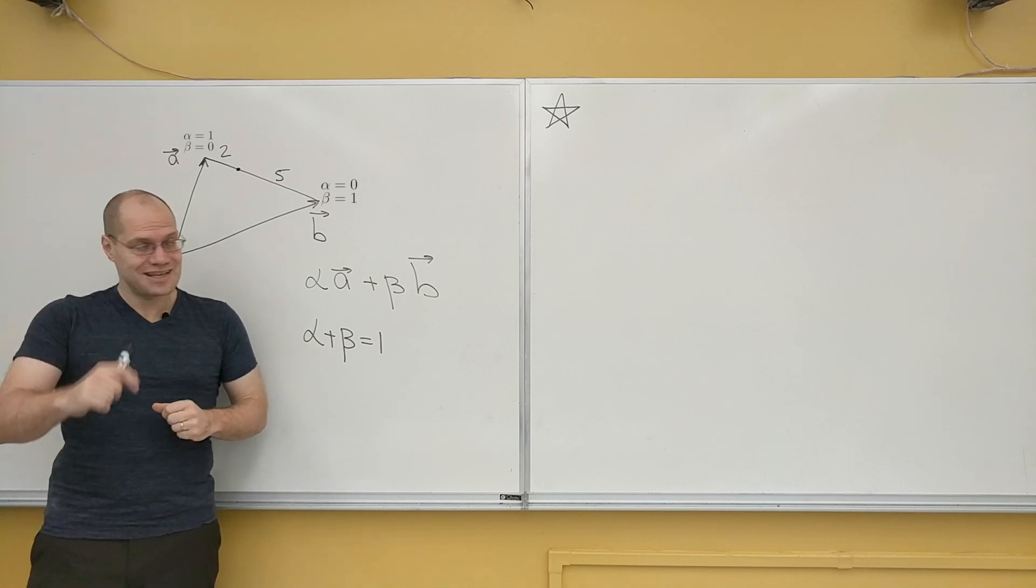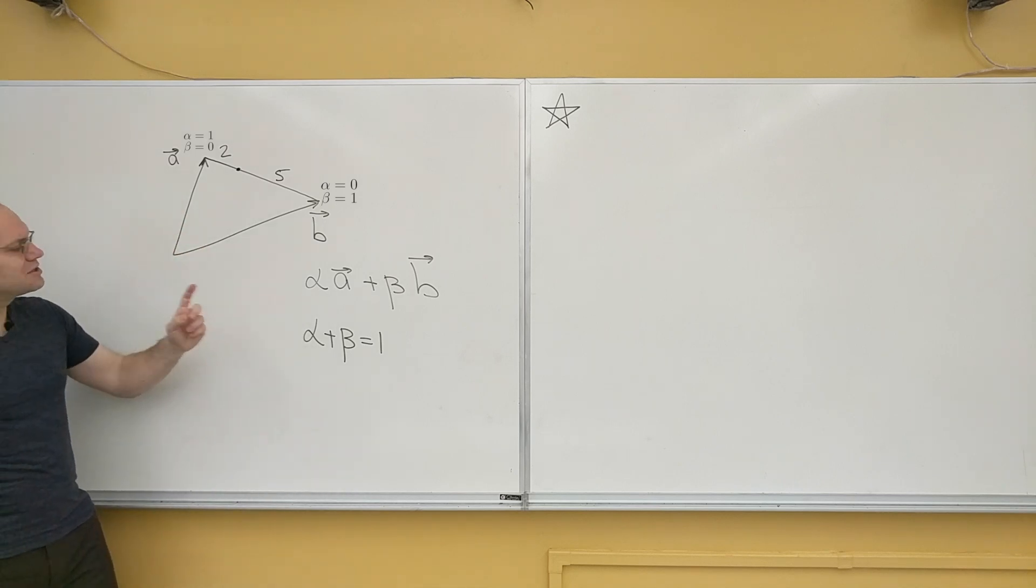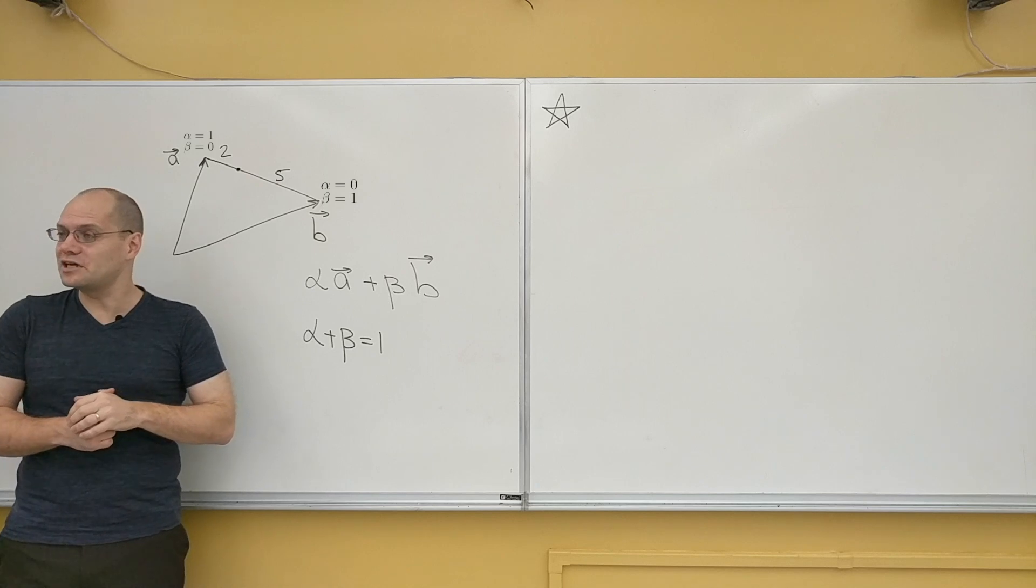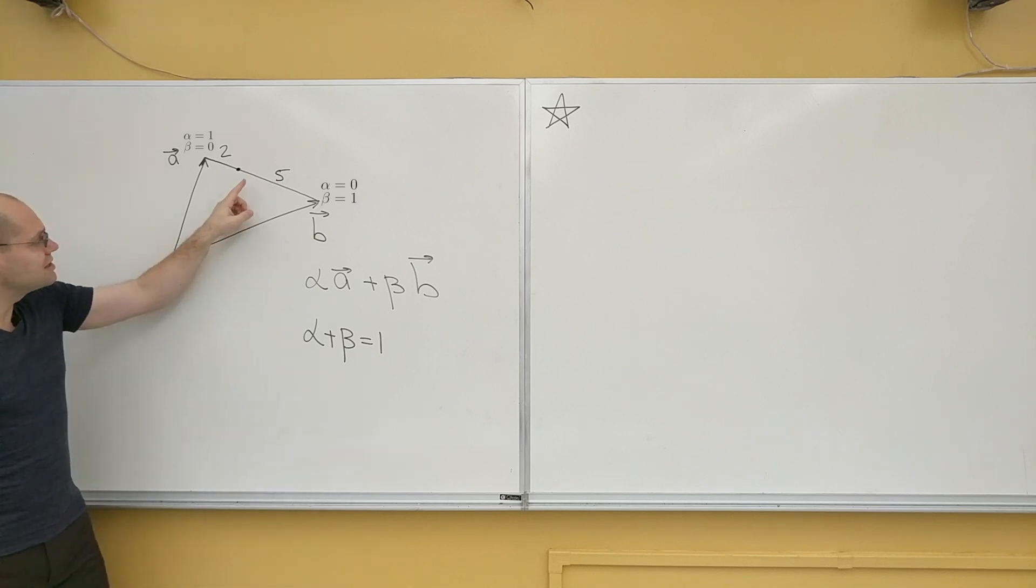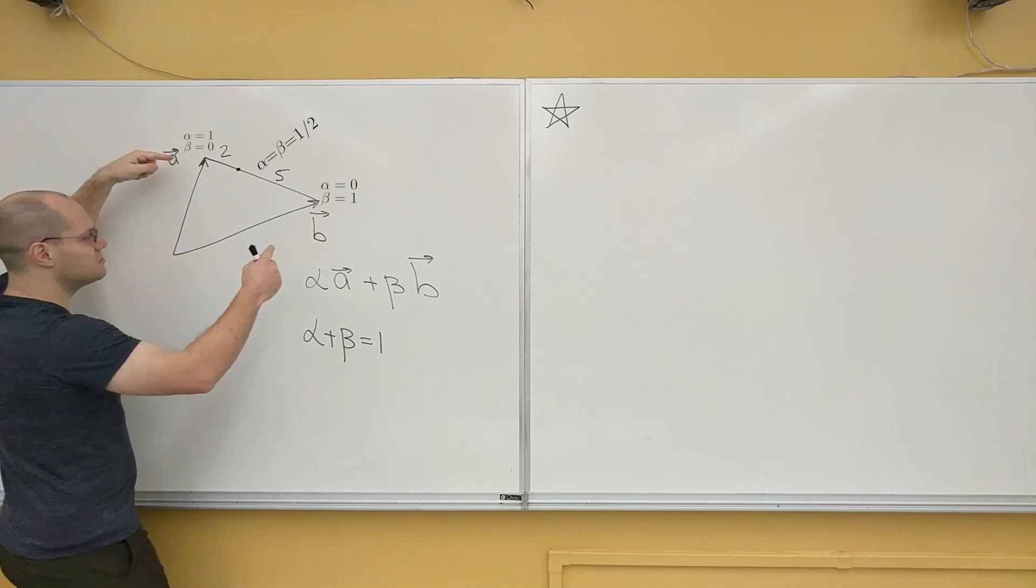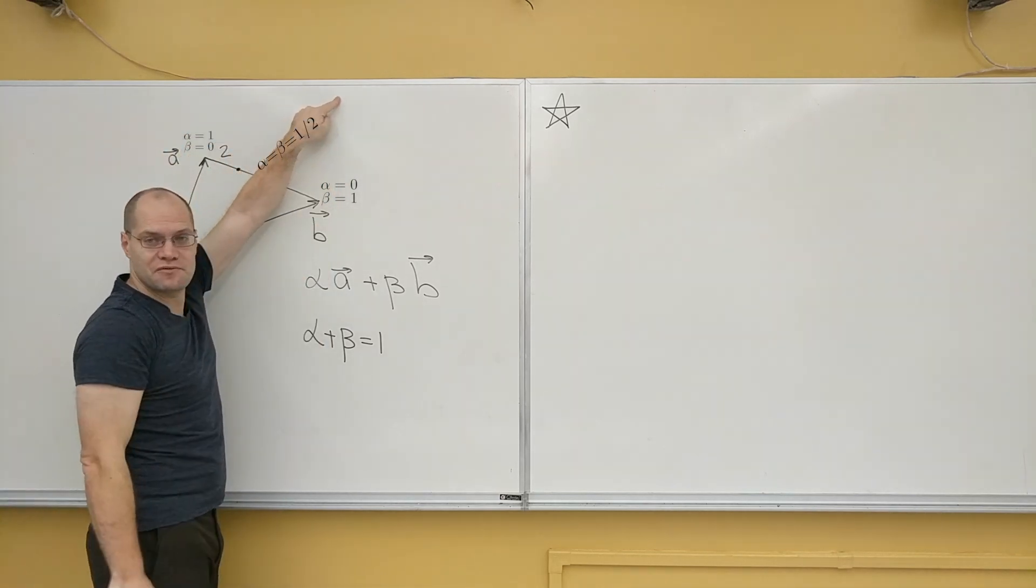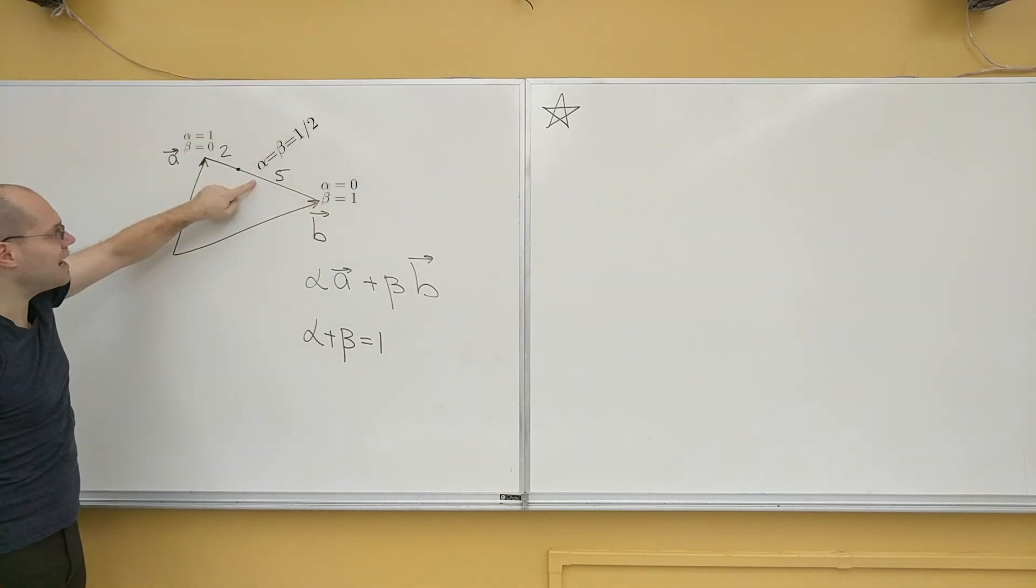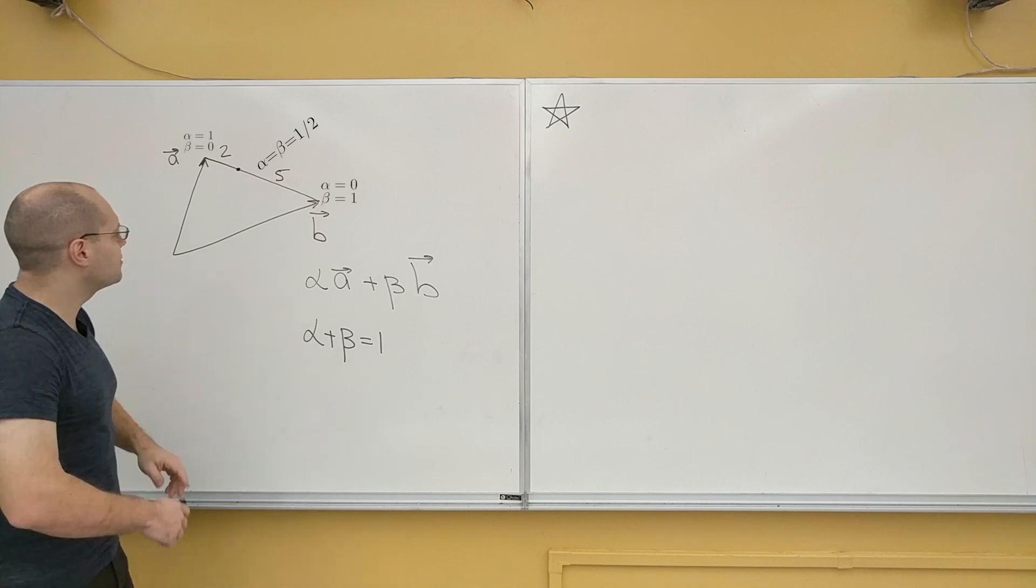For instance, for another example, if I were to take alpha and beta both equal to 1 half, then we're exactly in the middle. And sometimes I visualize it as being alpha plus beta, the tip of the parallelogram, and then 1 half of that brings us back to the center. That's another good intuitive geometric way of thinking about it.